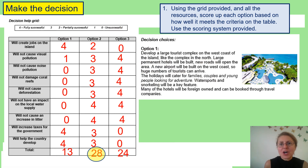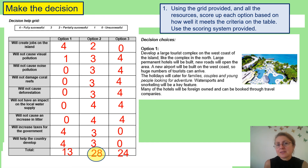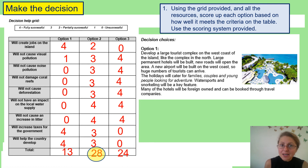Here is an example of a completed table — it's OK if you have different results. Option one, the hotel complex, scored 13 points. Option two, the small ecotourist resort, scored 28 points, and option three scored 24 points. The option which scored the highest points and best meets the government criteria of creating jobs, making money for locals and government whilst having the least impact on the island, is option two with the highest score.